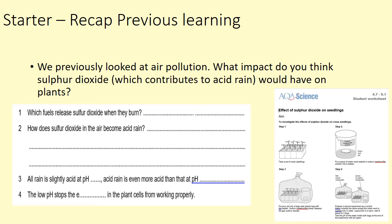How does sulphur dioxide in the air become acid rain? There are two fill-in-the-blanks: all rain is slightly acid at pH blank, and acid rain is even more acidic than that at pH blank. The low pH stops the blank in the plant cells from working properly. Pause the video and have a go at those questions before you look at the answers.